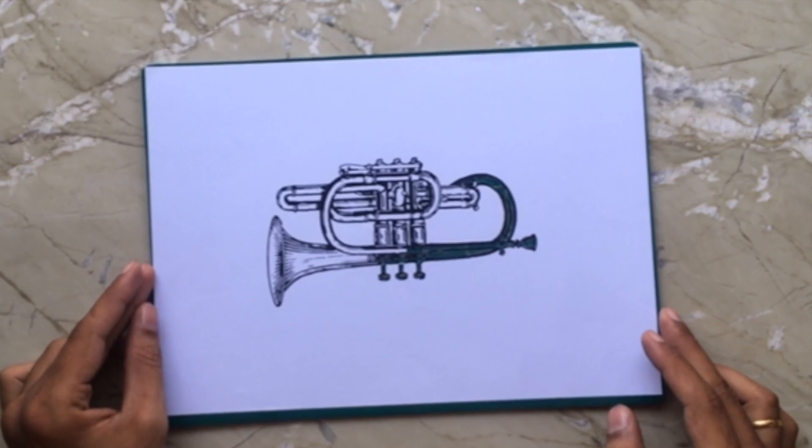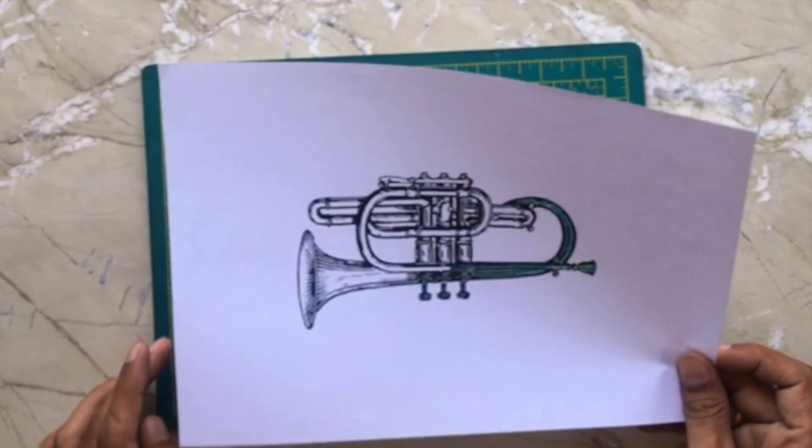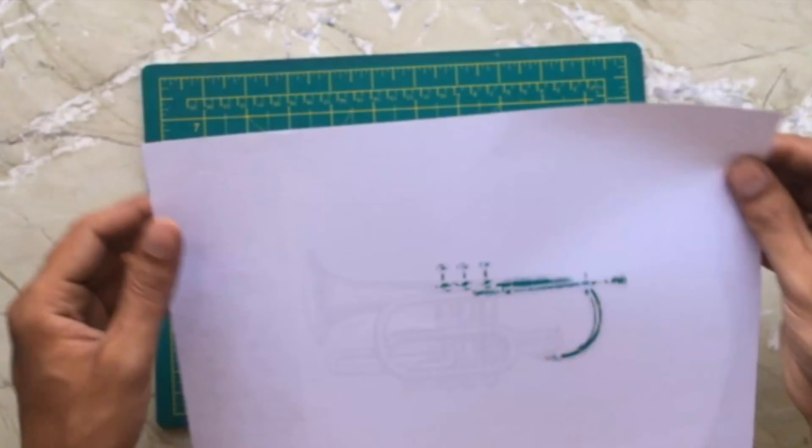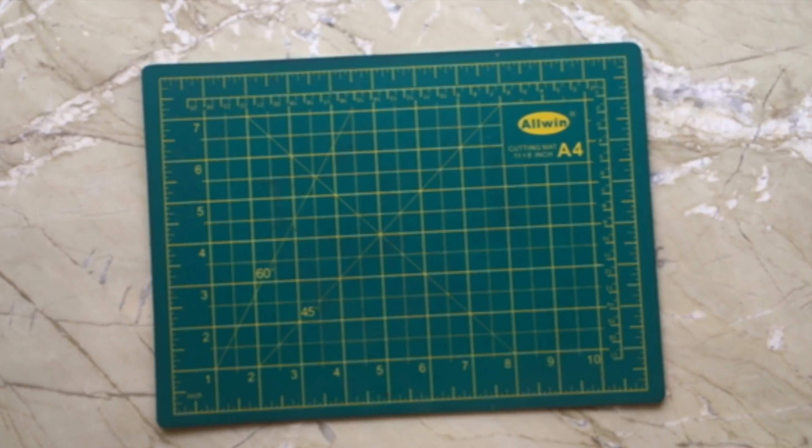The larger mats are a little expensive, so if you are a beginner in the paper cutting art, it is recommended that you start with the A4 cutting mat and gain some experience in paper cutting. Once you are more comfortable with the paper cutting, then you can go for the larger mats like the A3 or A2 or A1 size cutting mats.